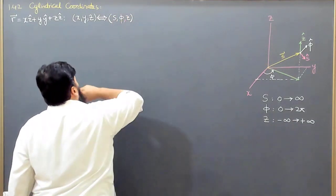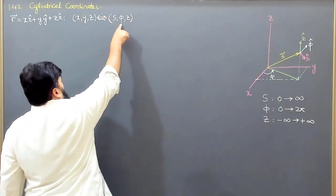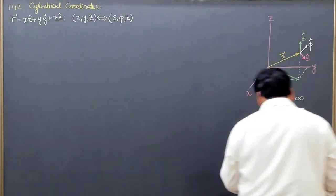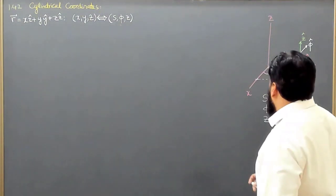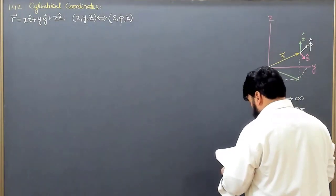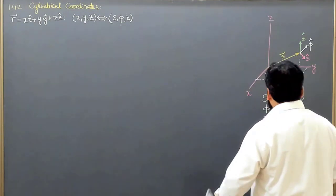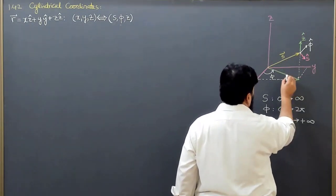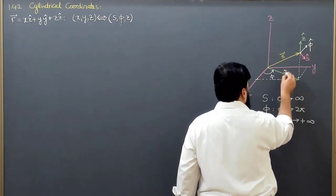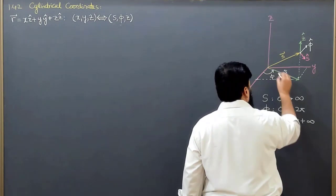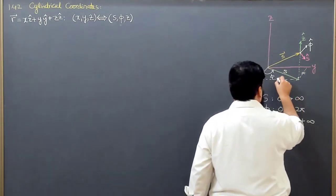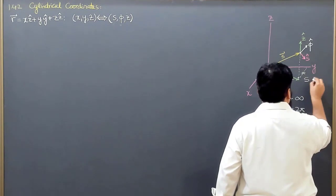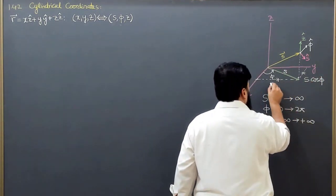We will now derive the x, y, and z components. As we covered in spherical polar coordinates, any vector R in Cartesian coordinates equals x times the x-unit vector plus y times the y-unit vector plus z times the z-unit vector. In Cartesian coordinates we have x, y, z — which were earlier converted to R, theta, and phi — and now they will be converted into S, phi, and Z. The cylindrical coordinates have only one angular component and two length components, making them comparatively easier to work with.